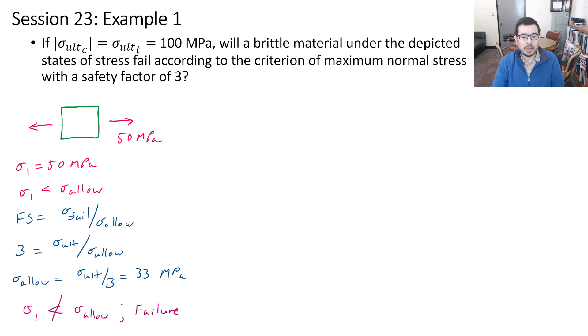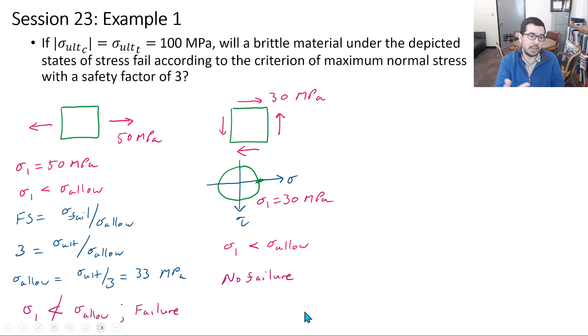Let's do another example. Here we have an element under pure shear and we quickly draw a Mohr circle to see that the maximum normal stress is going to be 30 megapascals. We calculated just a minute ago that σ_allow was 33 megapascals. Our σ₁ is 30 megapascals, therefore we don't expect failure or we're satisfying the appropriate safety factor.